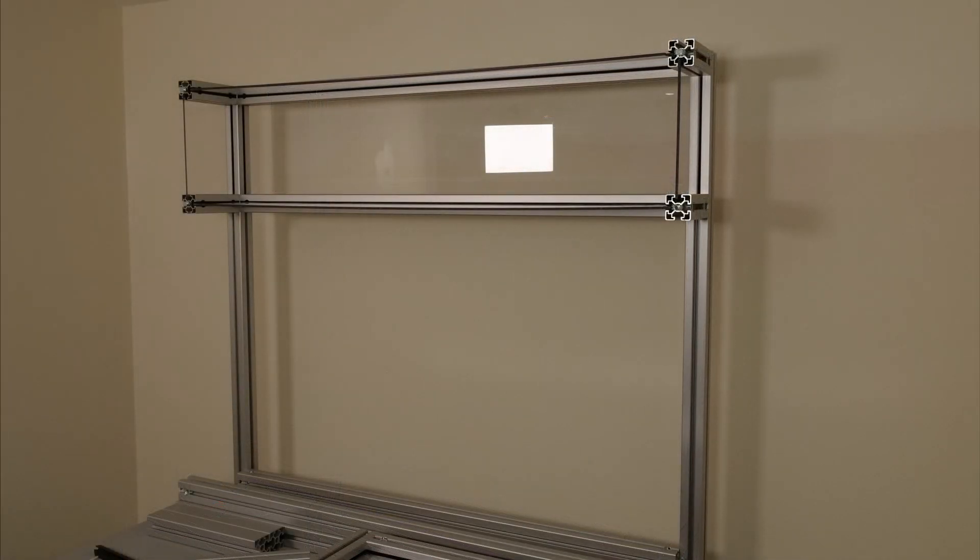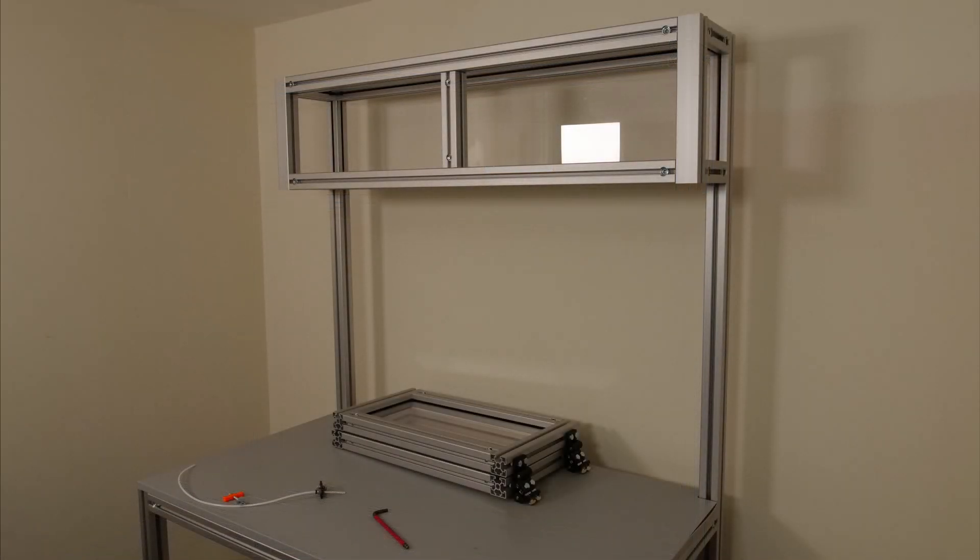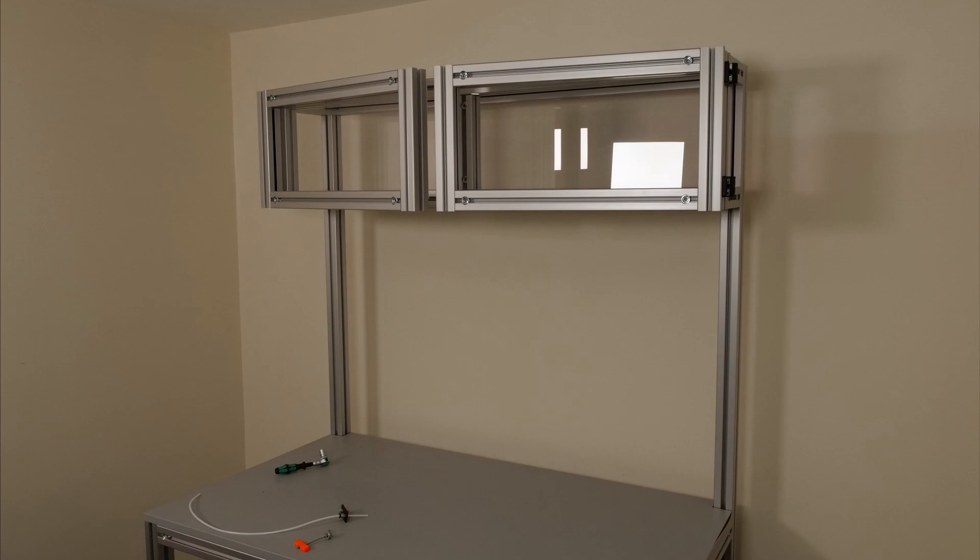The doors are assembled separately and they're added as a single unit afterwards using a jig to hold them in place as they are at the moment quite heavy. Finally we can finish off by assembling a spool holder, placing it inside and adding a bracket to hold the PTFE tube.